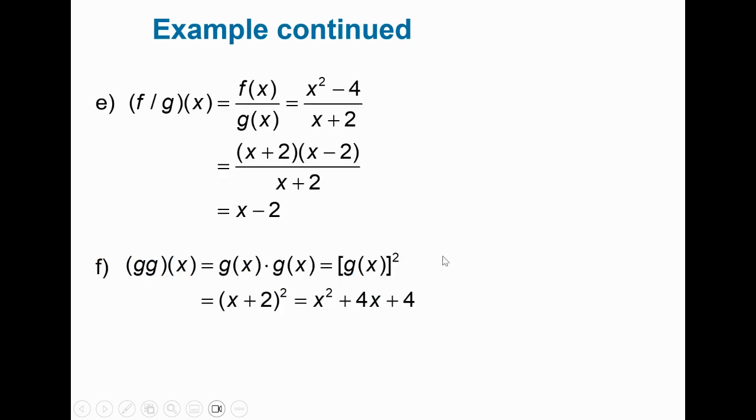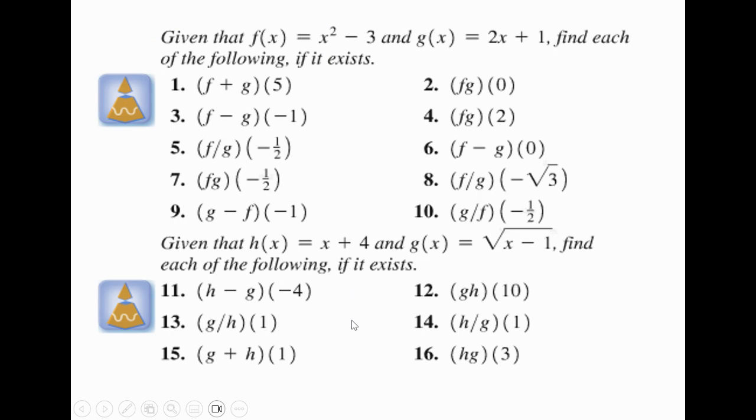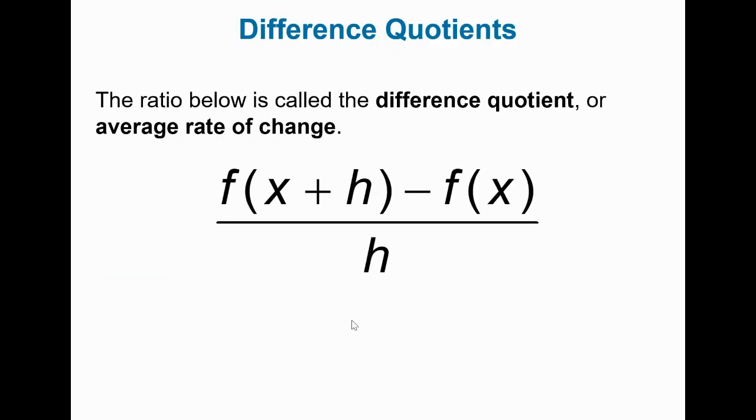The quotient, taking the f function, dividing it by the g function, you recognize that the numerator is the difference of squares, factors into x plus 2 and x minus 2. The x plus 2s would cancel out. GG of x, take the g function, multiply it by itself, or g of x squared. Take something and multiply it by itself means squared. x plus 2 quantity squared, you've got to foil this, you can't just square the first term and the second. x plus 2 times x plus 2, foiling is x squared plus 4x plus 4. This is something that we would do if we were in class. Same thing there.